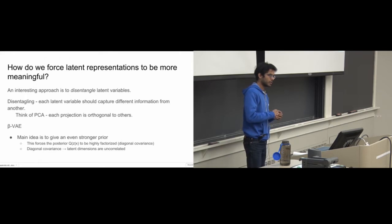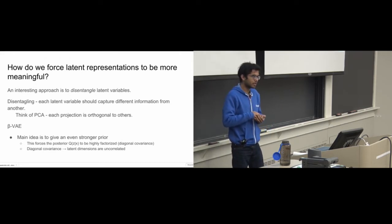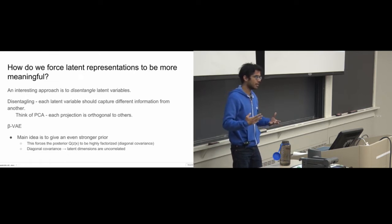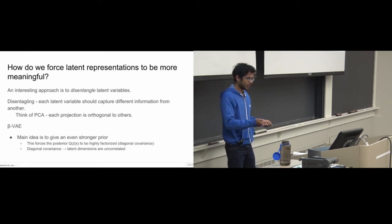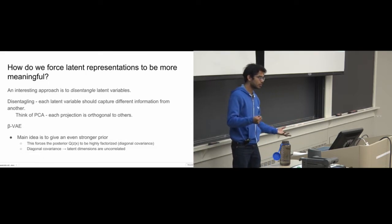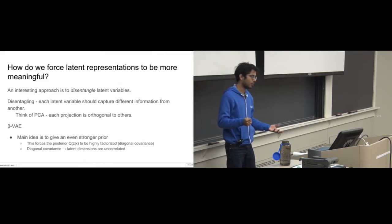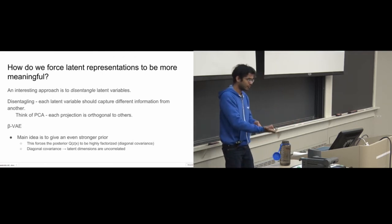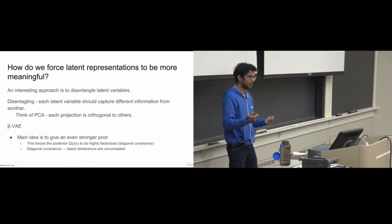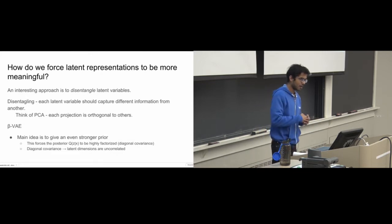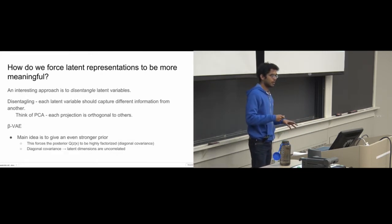Another question is how we force latent representations to be more meaningful. In my research, one application is latent variables in dialogue — you want a hierarchical dialogue RNN where the latent variable captures information about dialogue acts: is this an opinion question, a statement of fact? You want to capture these variations without any labeled data, but you also want interpretable neural networks. This is where disentangling comes in: each latent variable should capture very different information from another. Think of PCA — each projection should be orthogonal to all others — we want latent variables to be as uncorrelated with each other as possible.